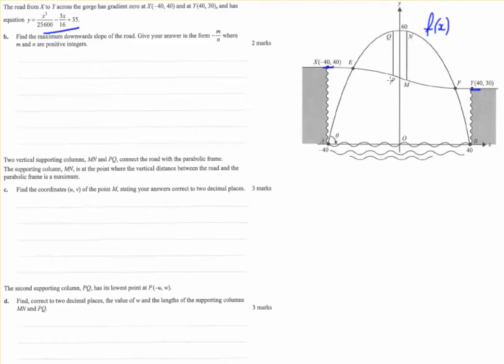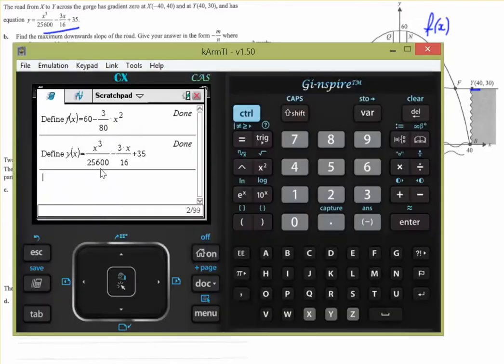So it looks like it occurs when x equals 0, but we can't assume. So the best thing to do here would be to take a derivative. Let's take the derivative of this function. So we're looking for dy/dx.